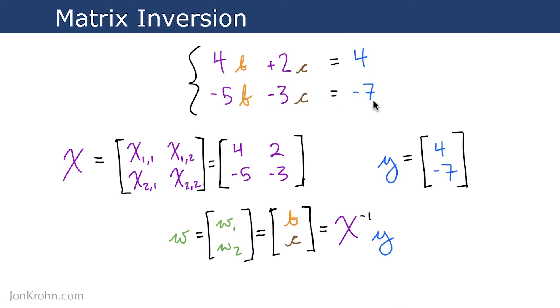So each row represents a different data point, a different instance in our data set. We have the outcome that we're predicting, and then we have the features that predict that outcome. So the features for predicting this outcome y equals 4 are 4 and 2. And the features that predict this outcome negative 7 are negative 5 and negative 3. And then we have these unknowns, b and c, these unknown variables that we're trying to solve for.